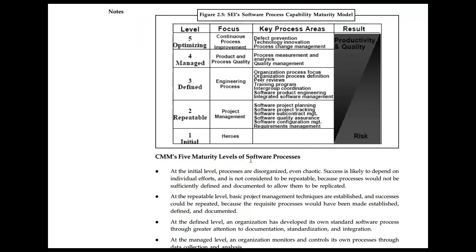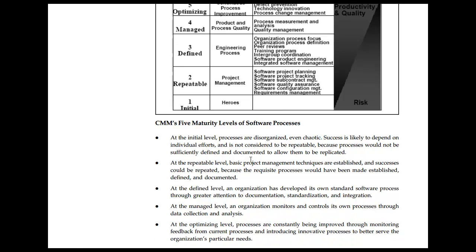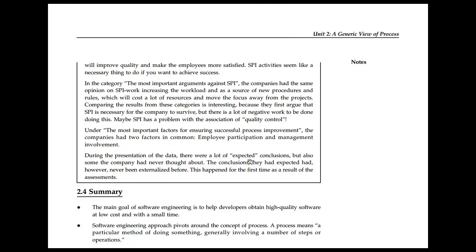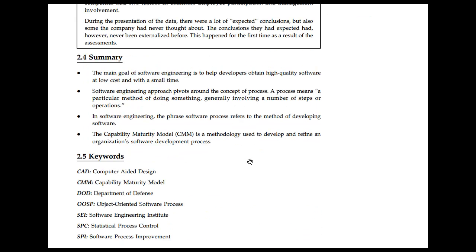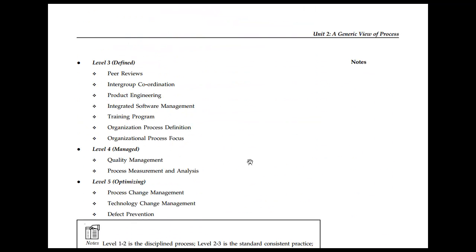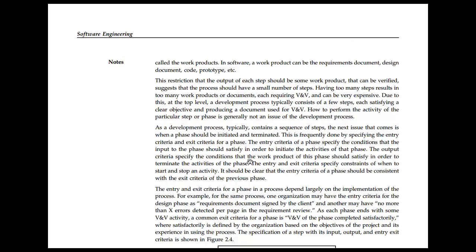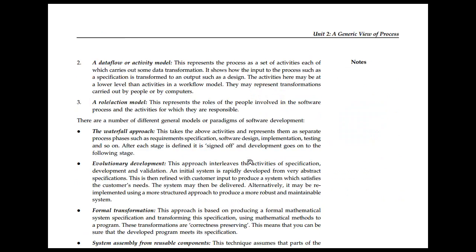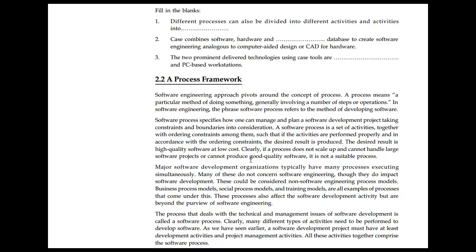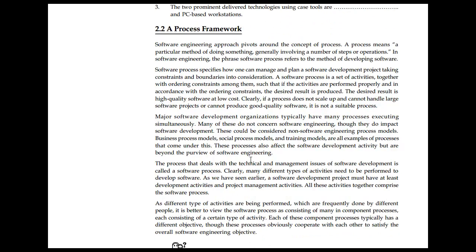The Capability Maturity Model, shown on the right-hand side, has five objectives and is a broad topic. It is a method of developing software processes. At a broad level, we look at how the software process works, centered around the process framework.